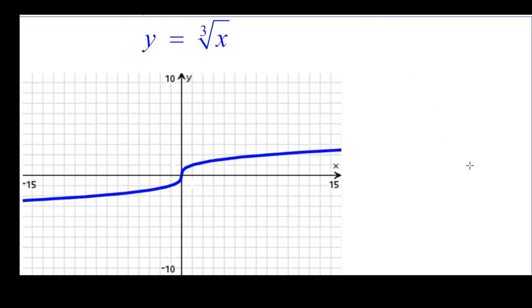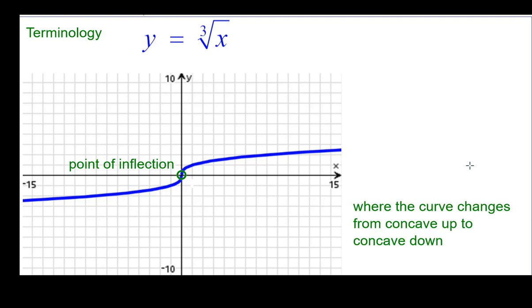So let's go ahead and look at some terminology. The origin on this graph is called a point of inflection just like we have one in y equals x cubed. This is where the curve changes from concave up to concave down. Concave up right here before the origin to the left of it.